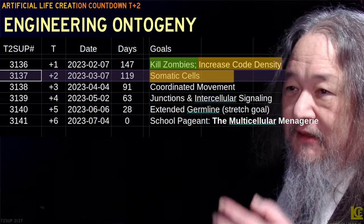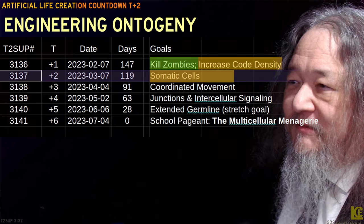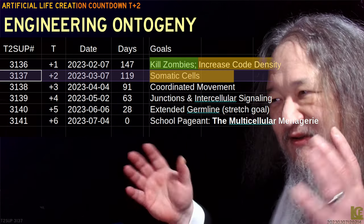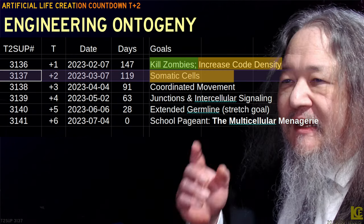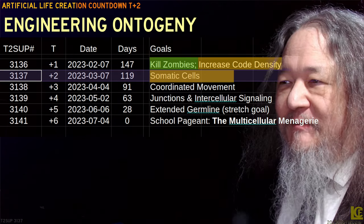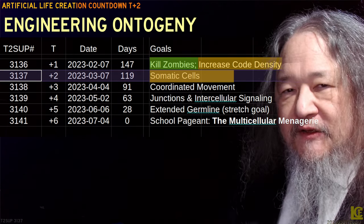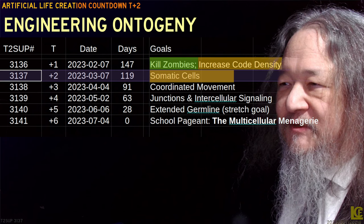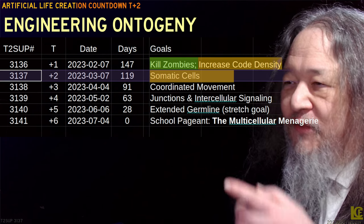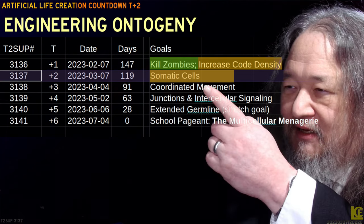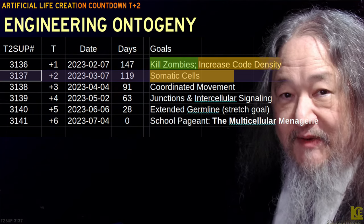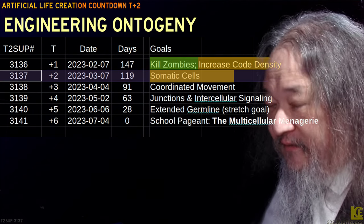So the schedule: last time, Kill Zombies, increased code density — it did pretty well with that. To this time: somatic cells, body cells. We sort of did that. We obviously need what's coming up next: coordinated movement.